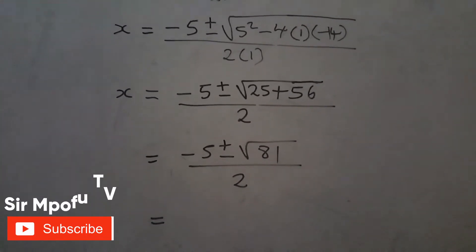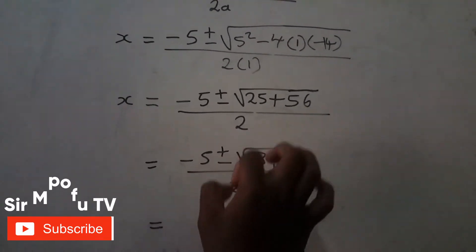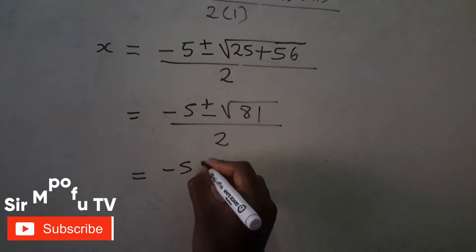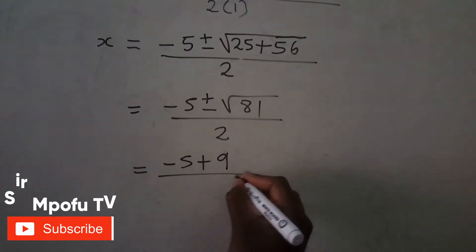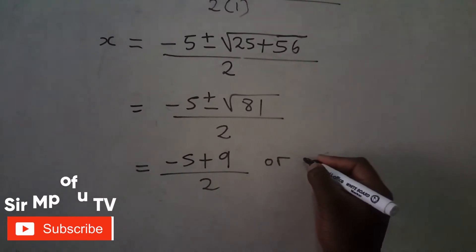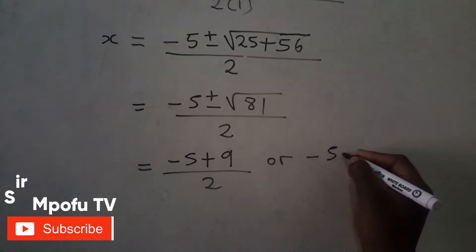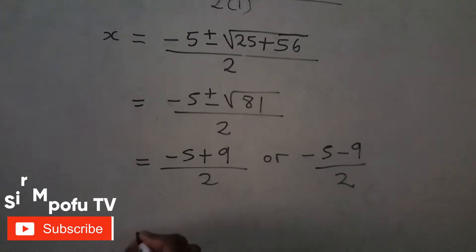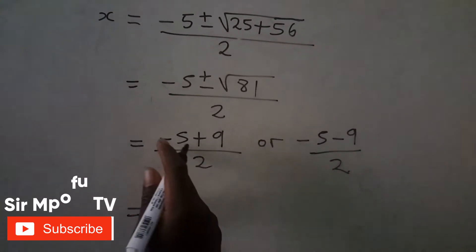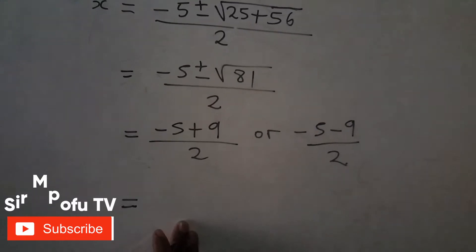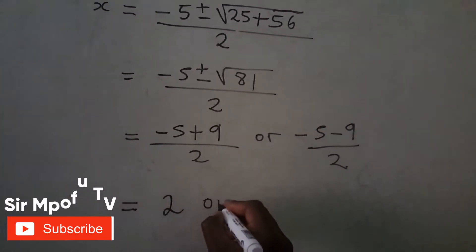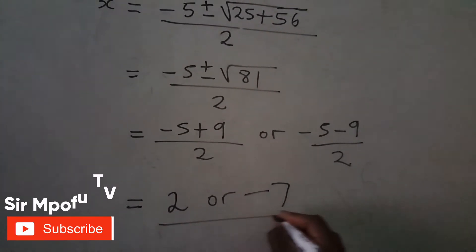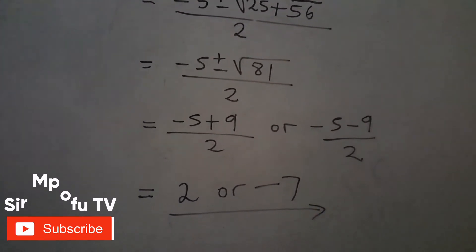Remember, we will have two values. The first takes the positive sign and the second takes the negative sign. So it's negative 5 plus 9 over 2, or negative 5 minus 9 over 2. That gives negative 5 plus 9 equals 4, divided by 2 equals 2; or negative 14 divided by 2 equals negative 7. So x equals 2 or x equals negative 7.